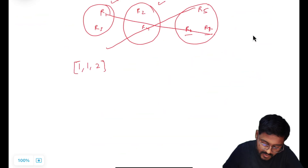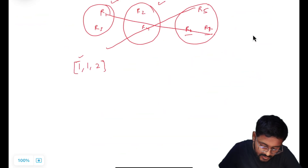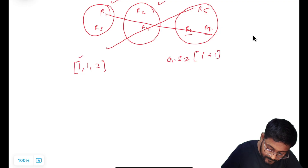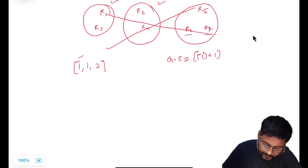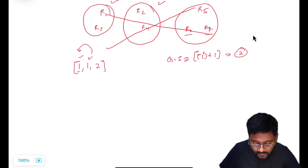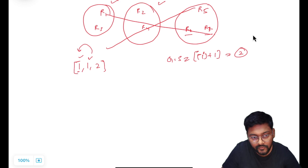Now with the answers array, the first rabbit is saying there is one more rabbit with the same color. The group size is always value plus one. This second element will also be from the same group because these values are same — if values are same we can accommodate these rabbits in the same group. This third value is different, so it will definitely be from a different group.